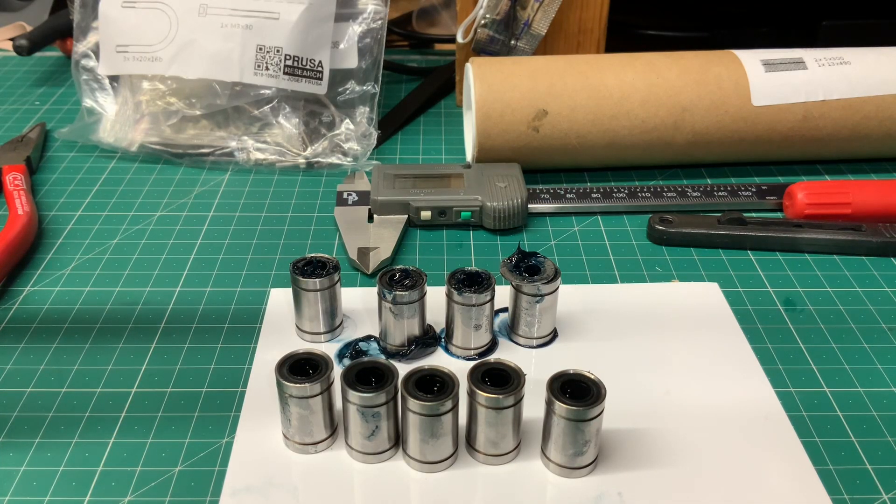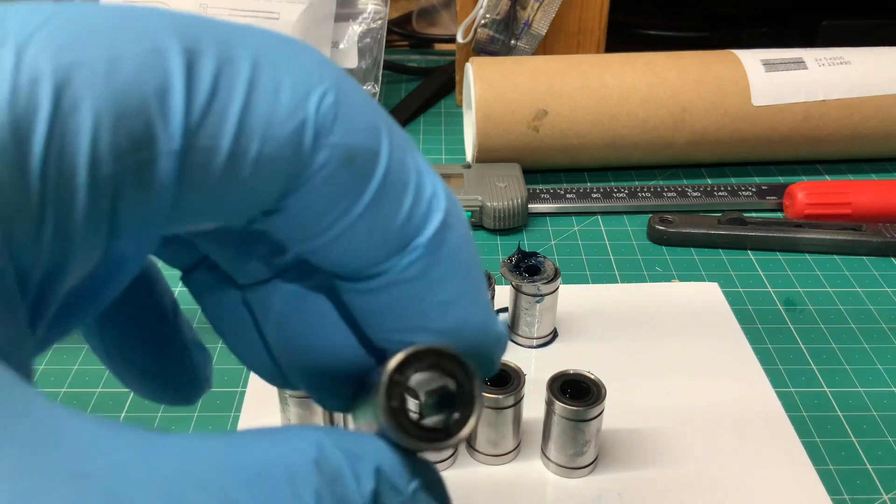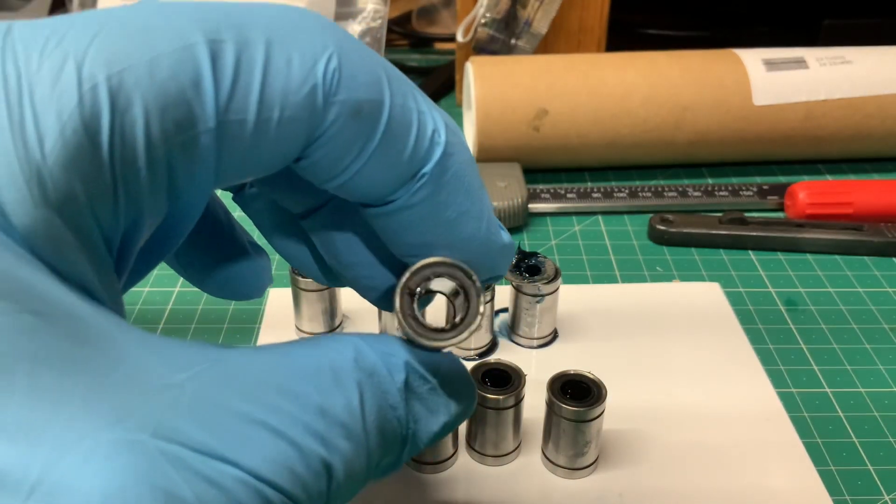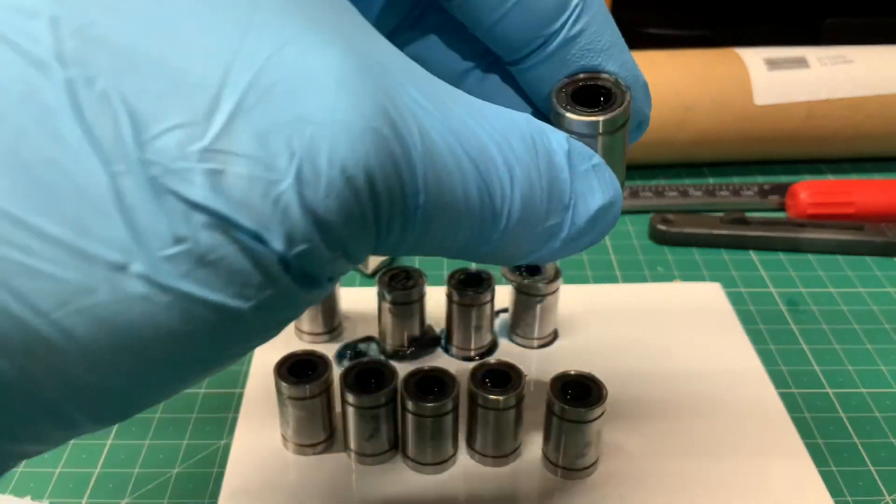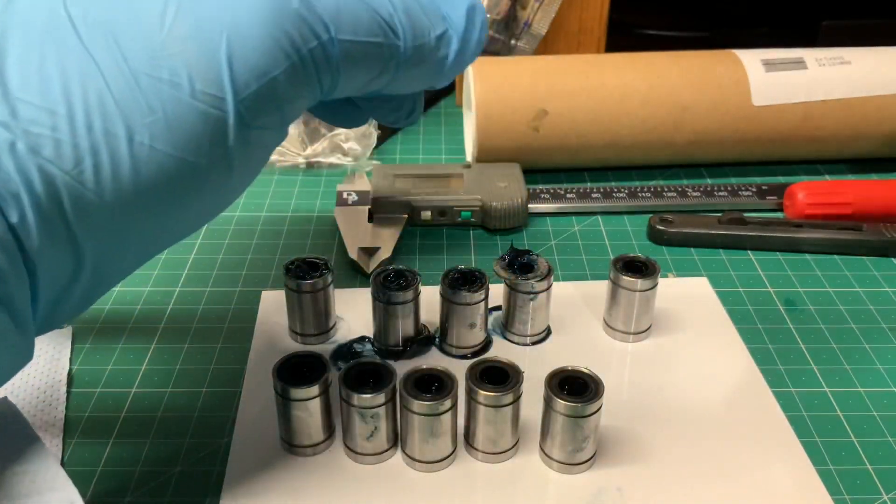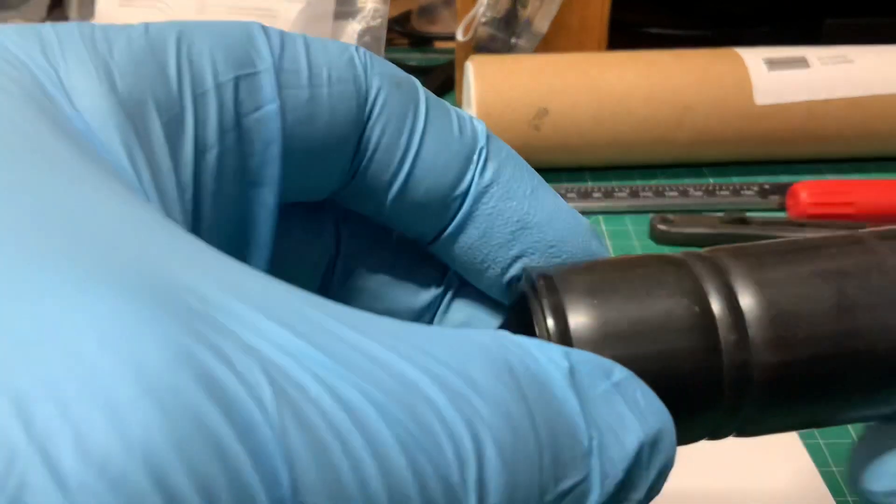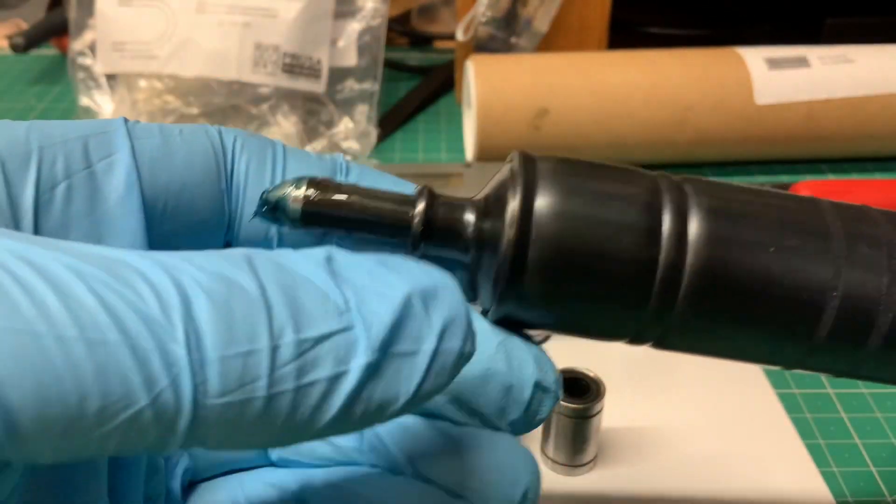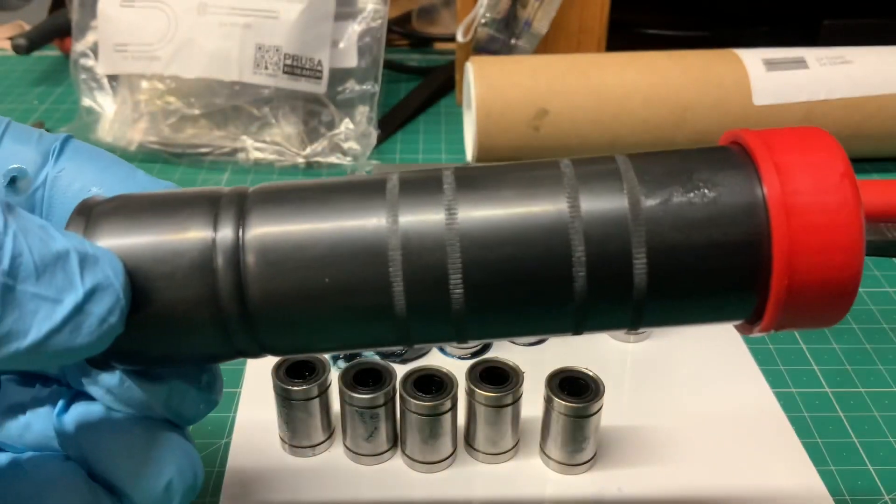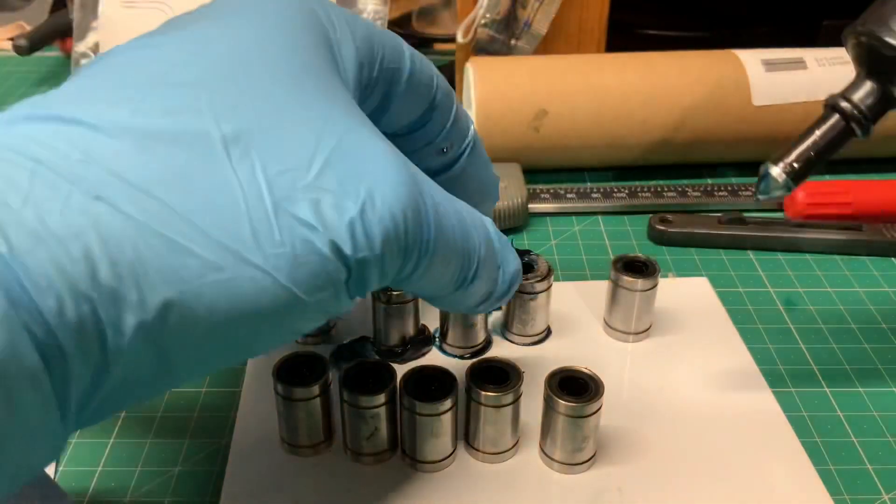Top tip to you guys if you're re-greasing the bearings through your Prusa printer. All you need to do is get an Oregon chainsaw grease gun, small thing's about eight or ten pounds.